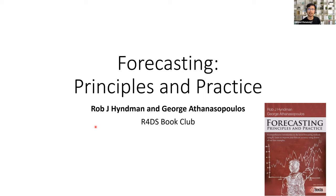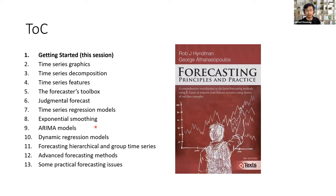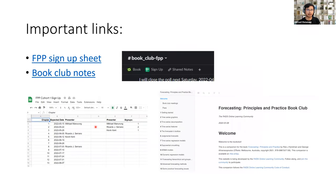Honestly, I don't have any knowledge at all on forecasting, but I am quite interested in it. Rather than learning new things on my own, I'd help facilitate the book club so that we can learn together. This book consists of 13 chapters, so we'll discuss the first chapter in this session. There are several important links — you can find the sign-up sheet for presentations in the Slack channel, including the link to the book itself.